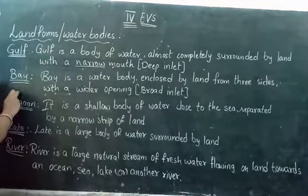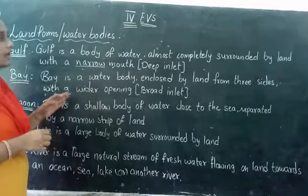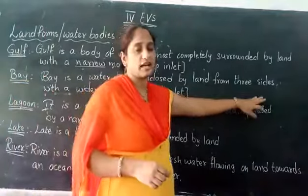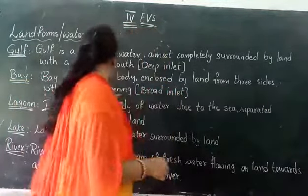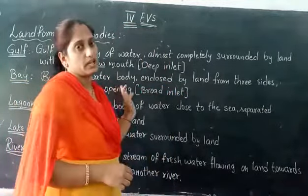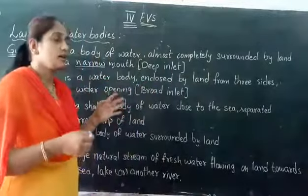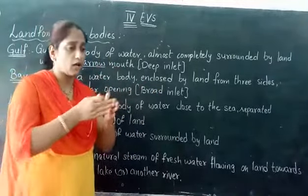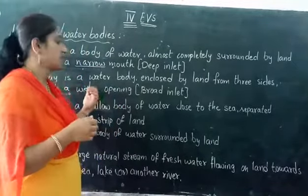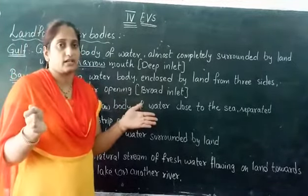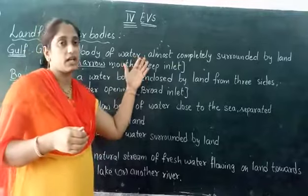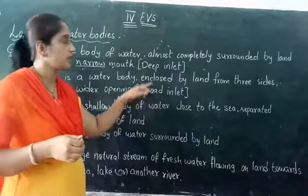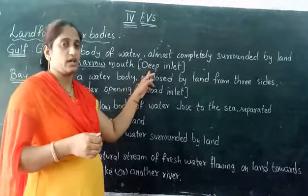Coming to the bay. A bay is a water body enclosed by land from three sides, with a wider opening. For a gulf, it is a narrow inlet, whereas for a bay, it is a broad inlet. That is the difference between a gulf and a bay. The inlet will be broad for bay, and deep and narrow for gulf.